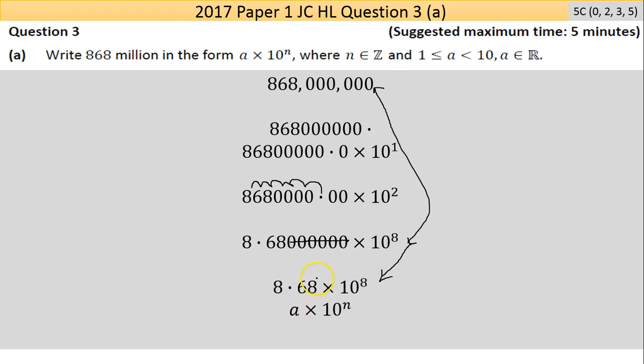Now, is my number that I multiply by—the 8.68—between 1 and 10? Yes it is. Is my n an integer? Is it a positive or negative whole number? That's a positive whole number, so I've written it the way they want it.